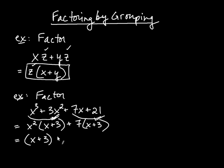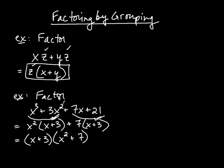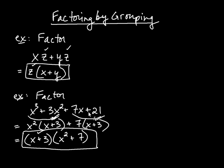When we took out the z, what was left? Well, x from the first term and y from the second. The same logic applies here. When you take out the x plus 3, what's left from the first term? Just x squared. And from the next one, when you take out the x plus 3, what's left? Just the 7. So the answer is x plus 3 times x squared plus 7. Notice how it's a product — they're multiplied together. This technique is called factoring by grouping because we formed two little groups early on.